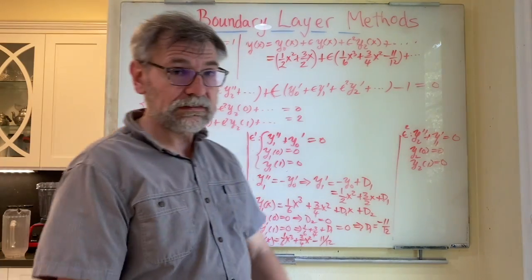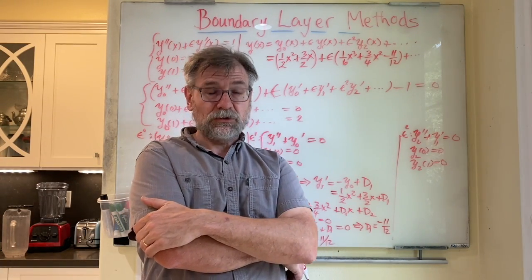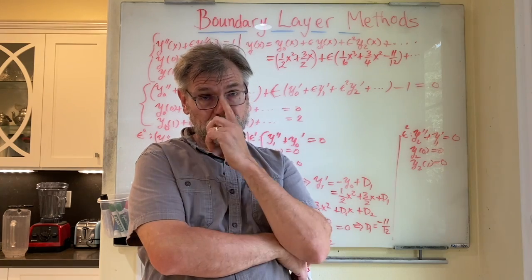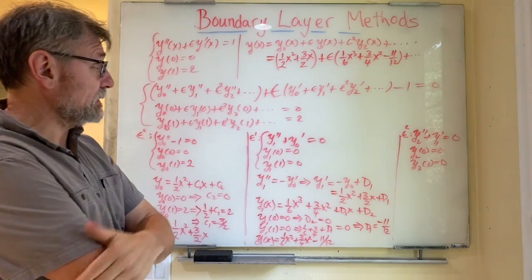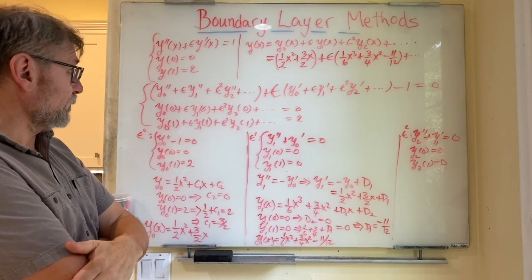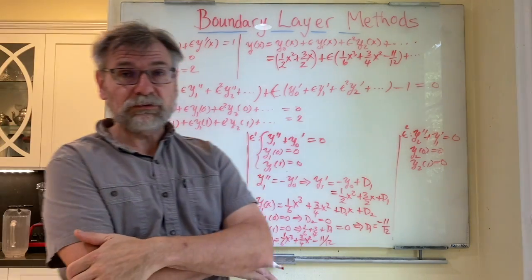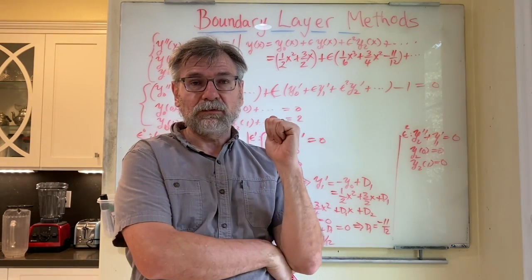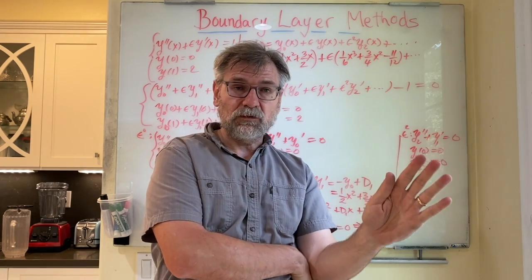This is an example of regular perturbation theory applied to solve a boundary value problem. Everything worked out nicely and we can satisfy all the boundary conditions. I did this so we can contrast it with the next problem, where things are not going to work so simply.